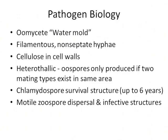Getting into control, we need to think about the biology of the pathogen. It's an oomycete water mold, dubbed a water mold because zoospores are released under saturation conditions. It has filamentous non-septate hyphae and cellulose in the cell walls. Phytophthora differs from true fungi, which have chitin in the cell walls. This cellulose can be important from a management perspective, which we'll get to.